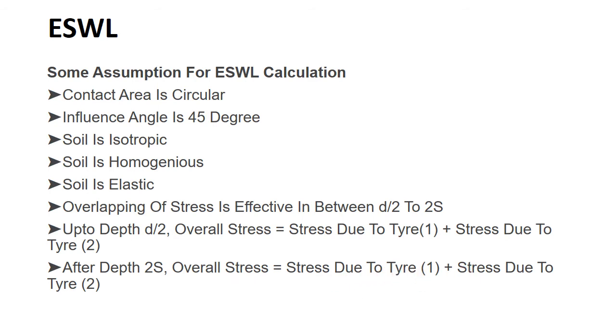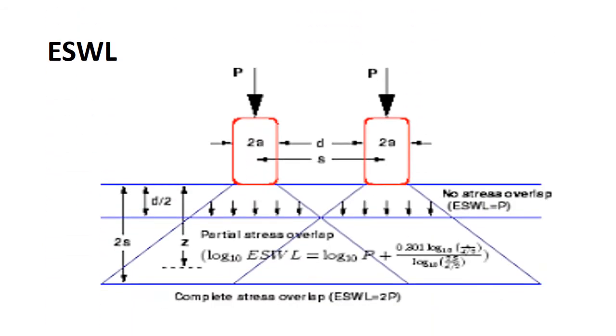In this figure, 2a is the diameter of the contact area, so small a is the radius of contact area. Small d is the distance between the inner side of two wheels, and S is the center-to-center distance between the two tyres. P is each wheel load. Here in this figure, you can see up to distance d/2, each wheel load P is acting individually. At approximately a distance of d/2, the stresses start to overlap.